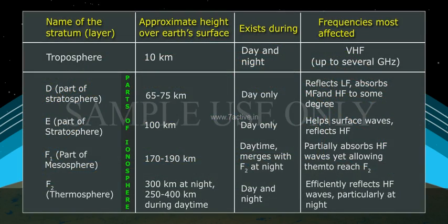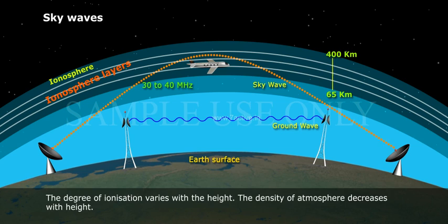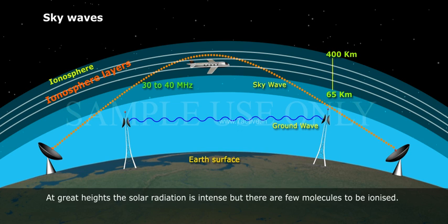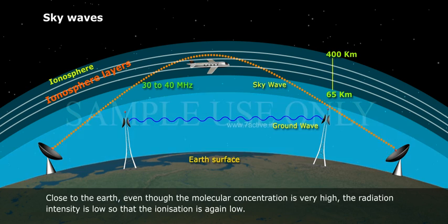The degree of ionization varies with height. The density of atmosphere decreases with height. At great heights, the solar radiation is intense but there are few molecules to be ionized. Close to the earth, even though the molecular concentration is very high, the radiation intensity is low so that the ionization is again low.